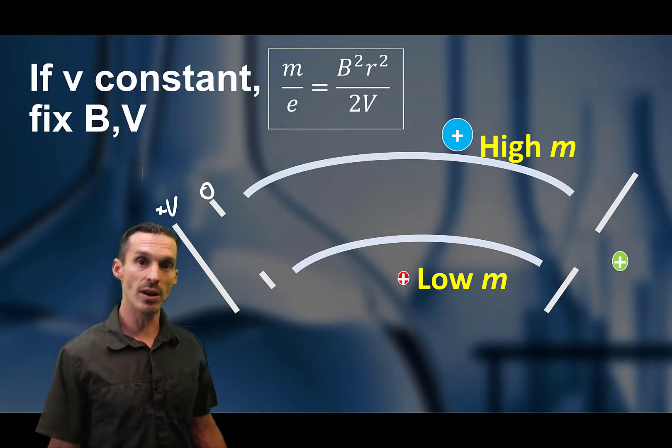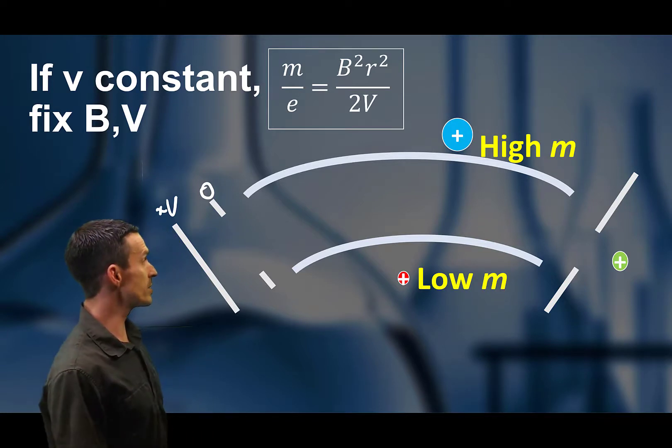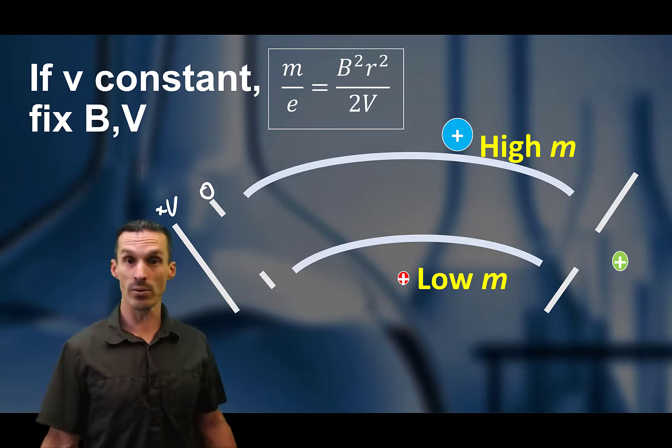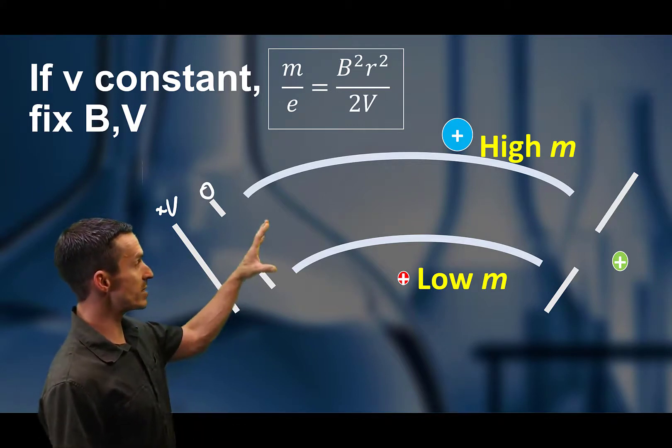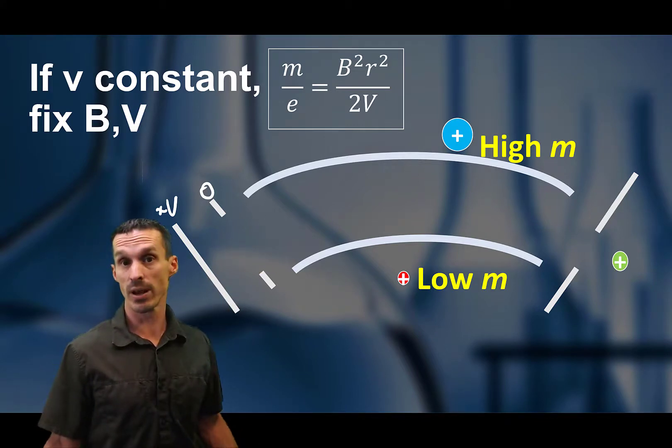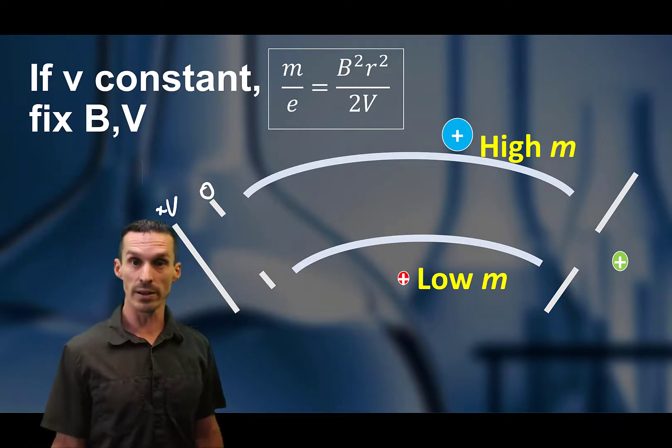If we can say that the velocity is constant, then this whole system is basically separating ions according to their m over z. And in this setup over here, we have a fixed magnetic field. We have a fixed radius. So you get these ions to curve like that. So how do you make this work as a mass spectrometer?